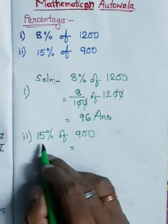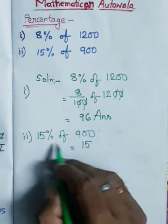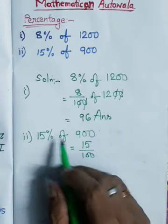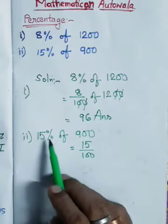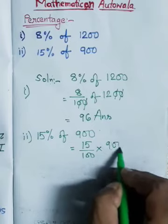We will do 15%, when we convert the percent, I have to write by 100. When we convert the percent, we need to convert by 100. So I am converting percent, so I am converting by 100 into 900.